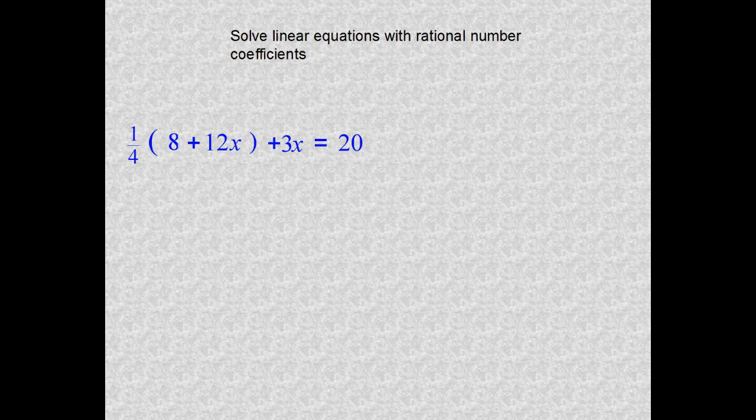Let's start with the distributive property. Always use GEMDAS or PEMDAS first. Look inside of these parentheses and see if you're able to put these two terms together. One is a constant and one has a coefficient attached to a variable, so these terms are not alike and you are not able to add them together. So we are going to use the distributive property first with our one-fourth. Maybe you can do it in your head, maybe we do it off to the side.